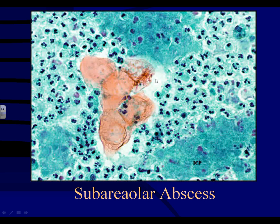This is from a subareolar abscess. These cells are anucleate squames — a very important clue to this lesion. These abscesses occur right beneath the areola. They show mixed inflammation with abundant neutrophils, and characteristically show anucleate squames because the areola is covered with stratified squamous epithelium. You don't see this in other types of abscesses. This type may need surgical debridement — it may not respond entirely to antibiotics.